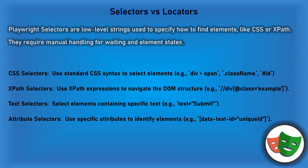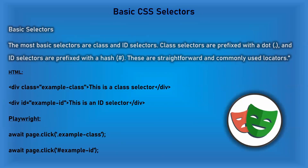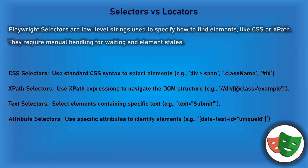Now the main question: selectors versus locators. Most of the time in Playwright, people use them interchangeably, but they have different meanings. Playwright selectors are low-level strings used to specify how to find an element — CSS and XPath both come under selectors. The main catch is they need manual handling because since it's a string, it could be any value or even wrong. Examples: dot class name, hash ID, XPath, text equals submit, and attribute selectors with tag name followed by square brackets.